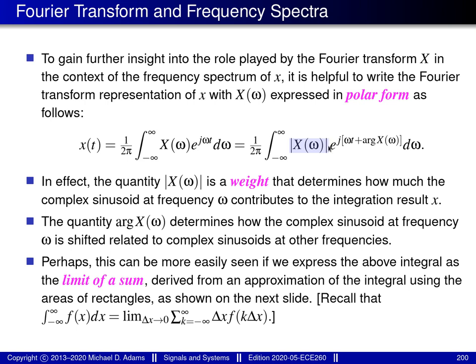So in some sense, we can think of the magnitude of the Fourier transform as a weight that determines how significant a contribution the complex sinusoid at frequency omega makes to the overall integration result. The significance of the argument of big X of omega is that it controls how much the complex sinusoid is shifted during integration. Since integrals are often more difficult to visualize than sums, it's beneficial to rewrite the integral in the Fourier transform representation as the limit of a sum.